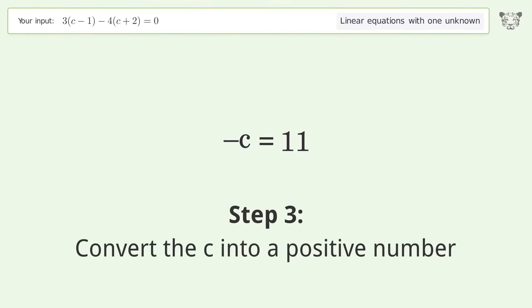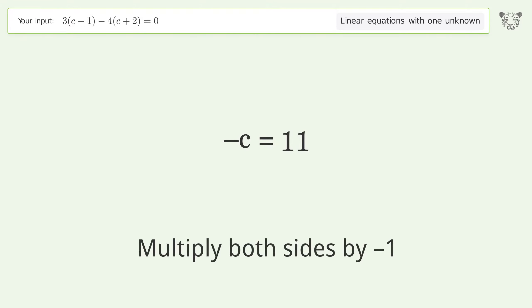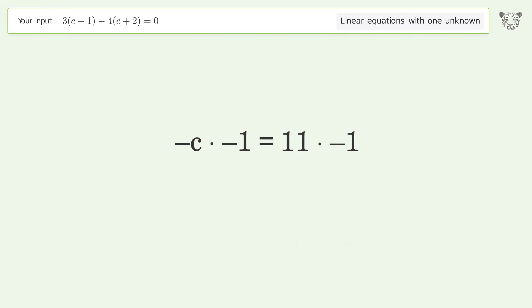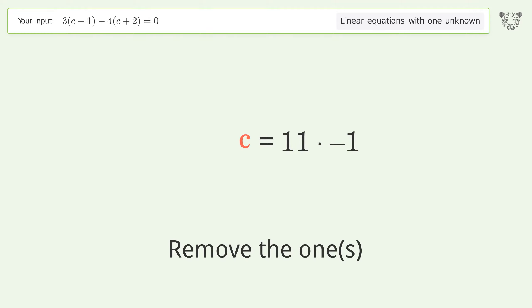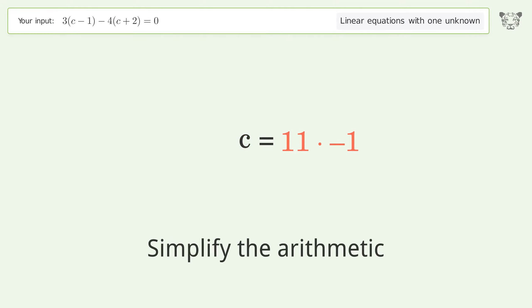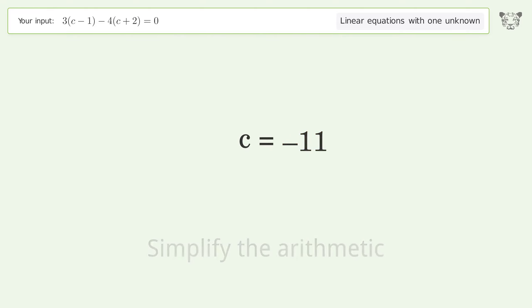Convert c into a positive number — multiply both sides by negative 1. Remove the ones and simplify the arithmetic. And so the final result is c equals negative 11.